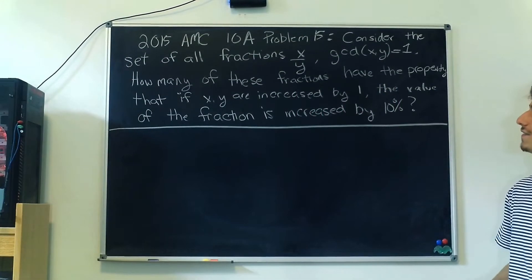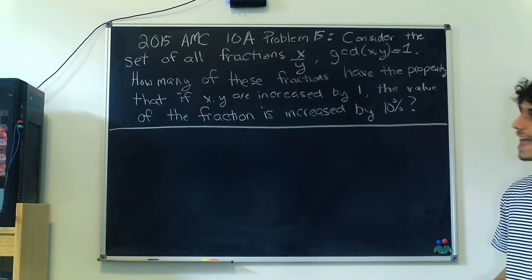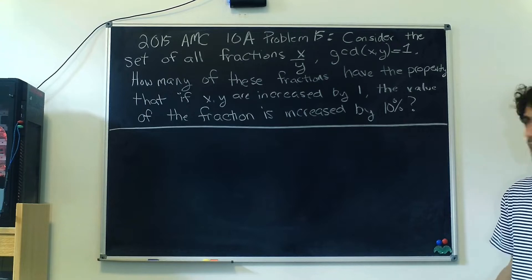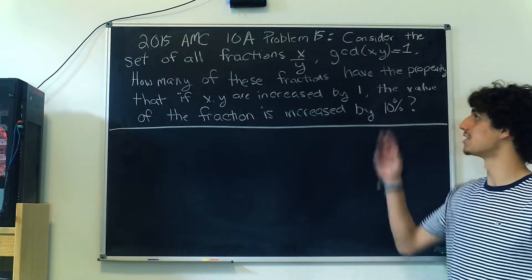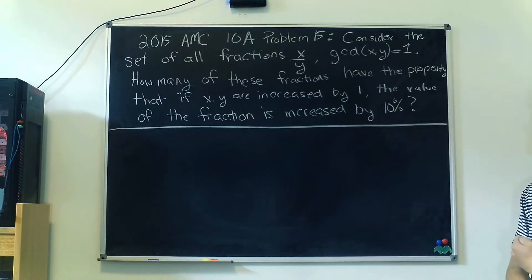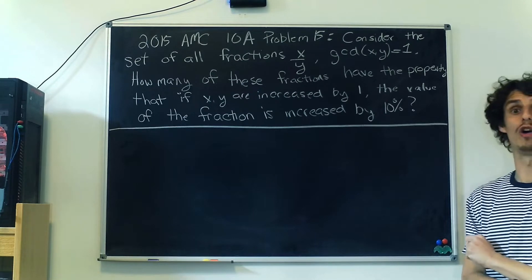Here we have a problem from the 2015 AMC 10A math contest, problem number 15. It asks us to consider the set of all fractions x over y such that the GCD of x and y is 1, and we're working over all the integers here.